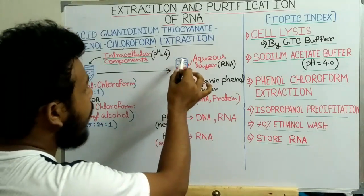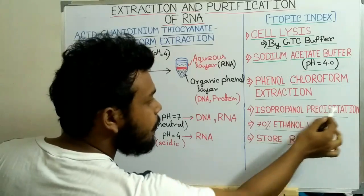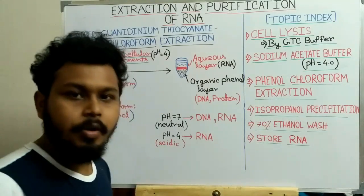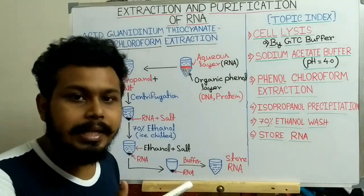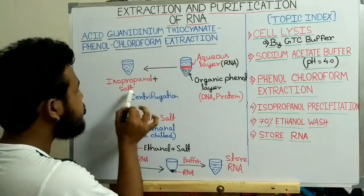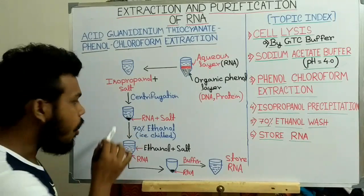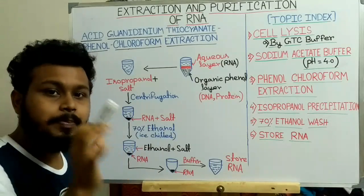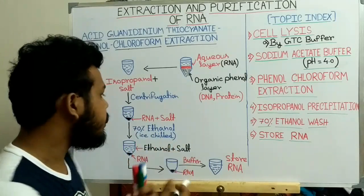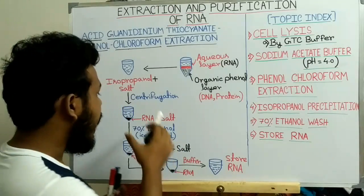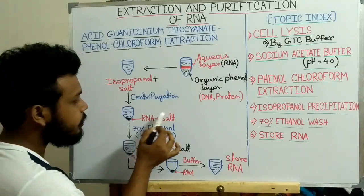After separating the aqueous layer containing the RNA, we collect it and perform isopropanol precipitation. The aqueous layer is added to isopropanol containing some salt. After centrifugation, RNA precipitates along with some salt. This precipitation works by a salting-out mechanism: the positively charged salt molecules shield the negatively charged RNA, reducing its solubility and causing it to precipitate.